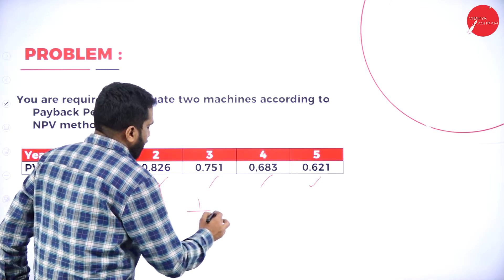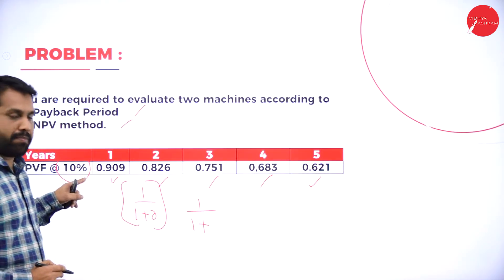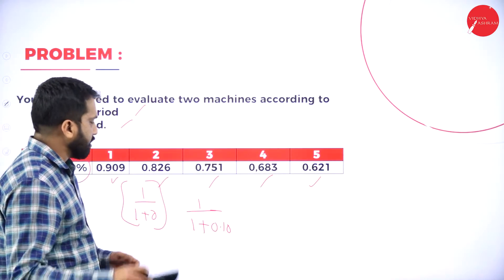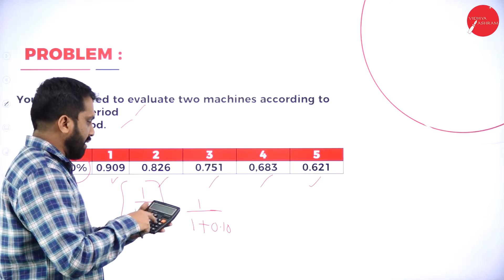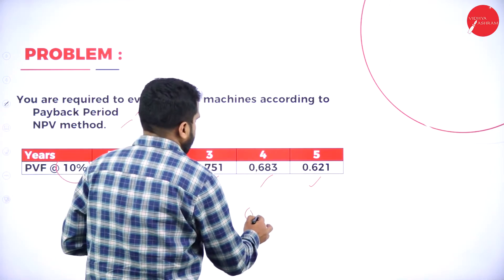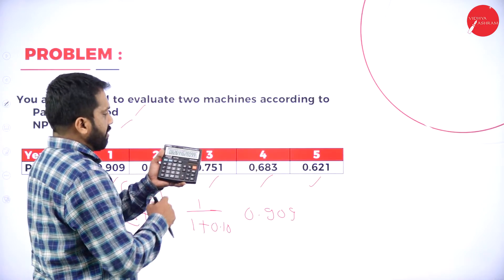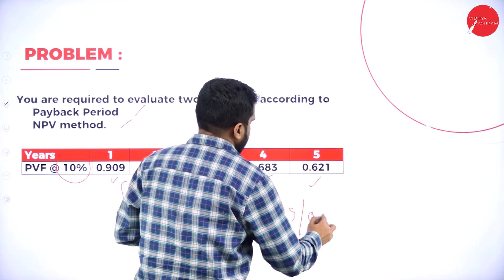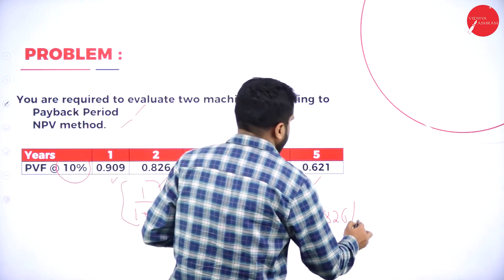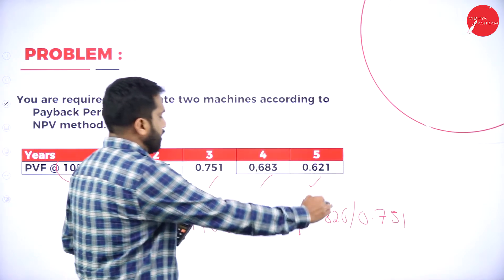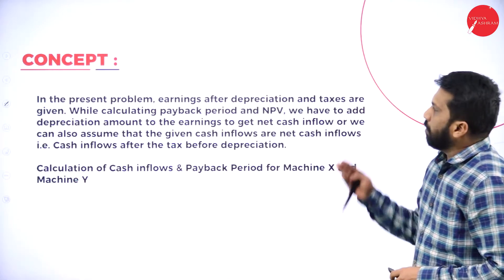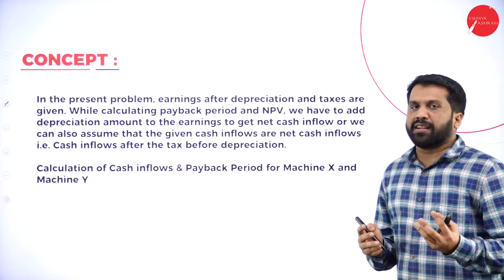1 divided by (1 plus R): R is 10%, which equals 0.10. So year 1: 1 divided by 1.10 = 0.909. Year 2 equals 0.826. Year 3 equals 0.751. Like this, we will get all the PV factors. Before we start our problem, just we will understand the concept.